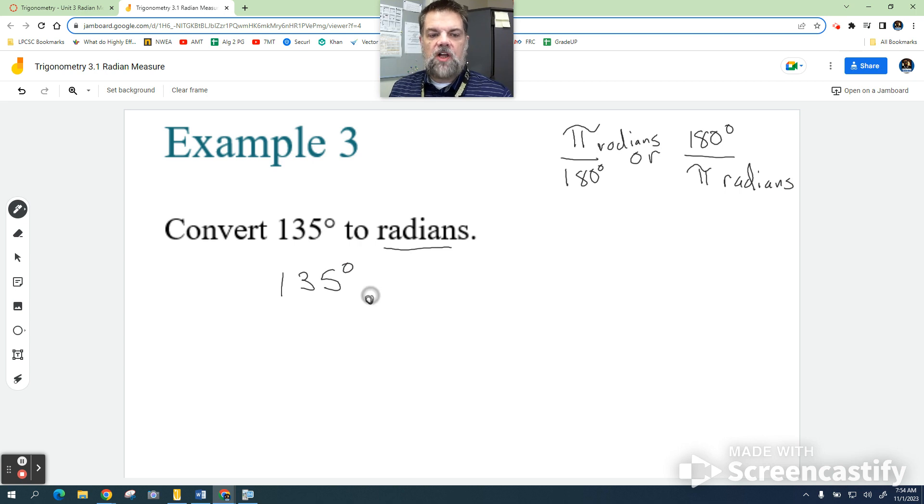Well, I'm going to multiply that by a conversion factor, but because degrees is on the top, I want degrees on the bottom, because that'll cancel. Also, my answer radians should be on the top, right? So what do I mean by that?